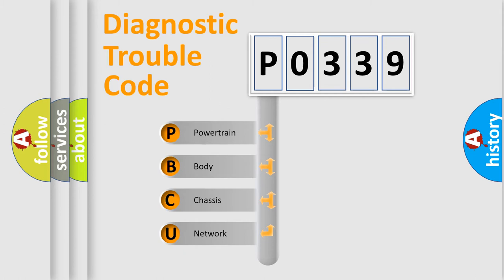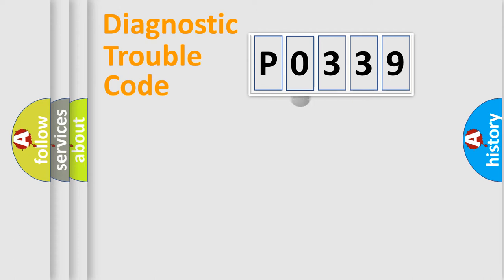We divide the electric system of automobile into four basic units: Powertrain, Body, Chassis, and Network. This distribution is defined in the first character code.